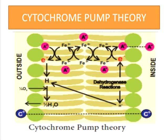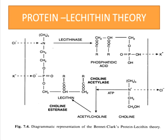Next is the protein lecithin theory, involving ATP, given by Bennett and Clark. This theory advocates that a phosphate group in the phosphatide acts as the active center for binding cations. Cations bind at the phosphatide center of lecithin, whereas anions bind at the choline group.